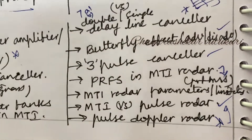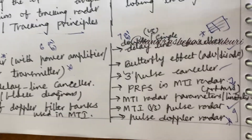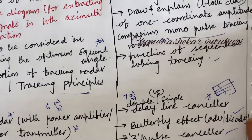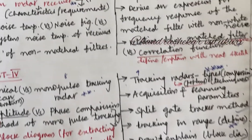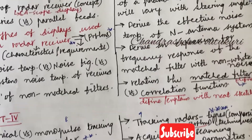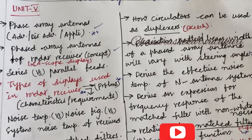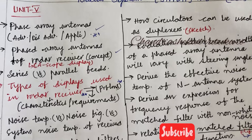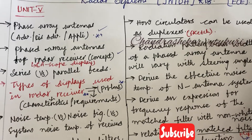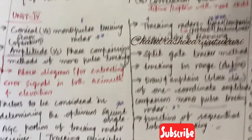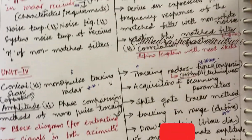Pulse doppler radar may occur as a short as well as long question. Dear students, as you have less time, revise all these answers once again. I have covered only Unit 5, Unit 3, and Unit 4 in this session.